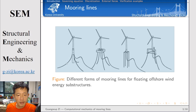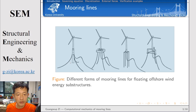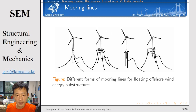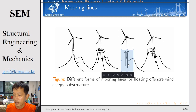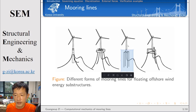The first type is the catenary type. In the case of the catenary type, it is extended in the horizontal direction, and because of the low angle, the mooring line near the anchor point must interact with the sea bed. To reduce the interaction, we can raise it up partially to reduce the length of interaction. Another form is the tension leg platform. In this case, we introduce high tensile force to the mooring lines so that we can provide high stability to offshore wind energy substructures.